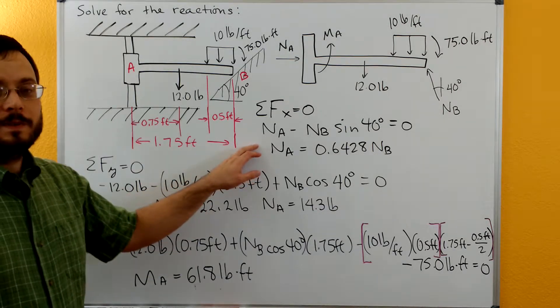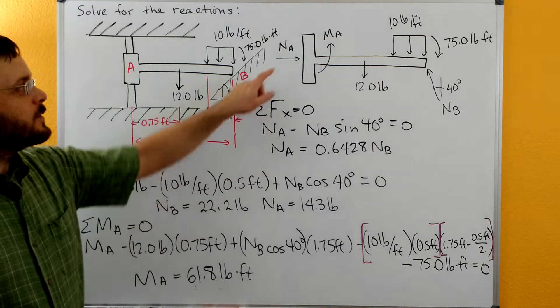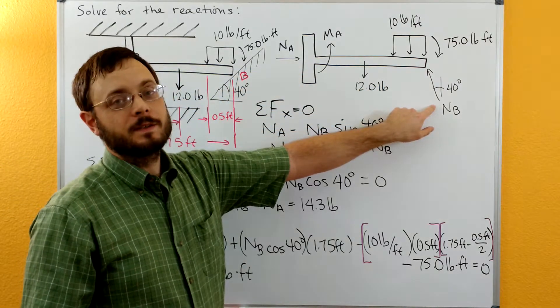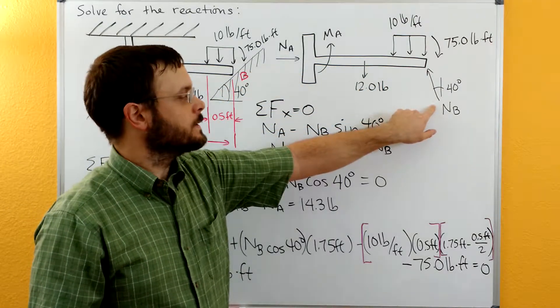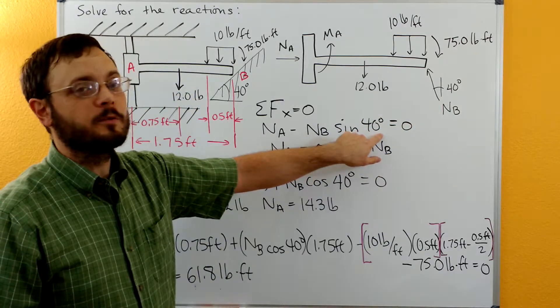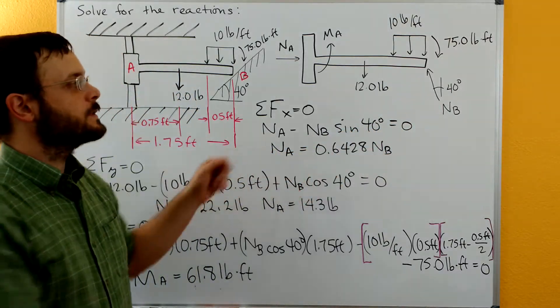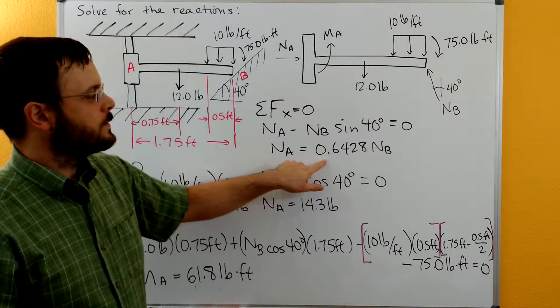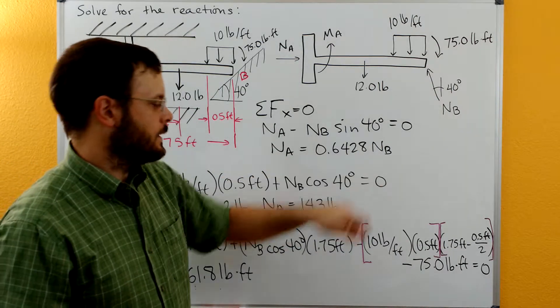Here's our sum of forces in the X equation. We have N_A and then the only other force that has an X component is this N_B. So we're going to use N_B sine of 40 degrees. The N_B is going in the negative direction. So we get N_A equals 0.6428 N_B.